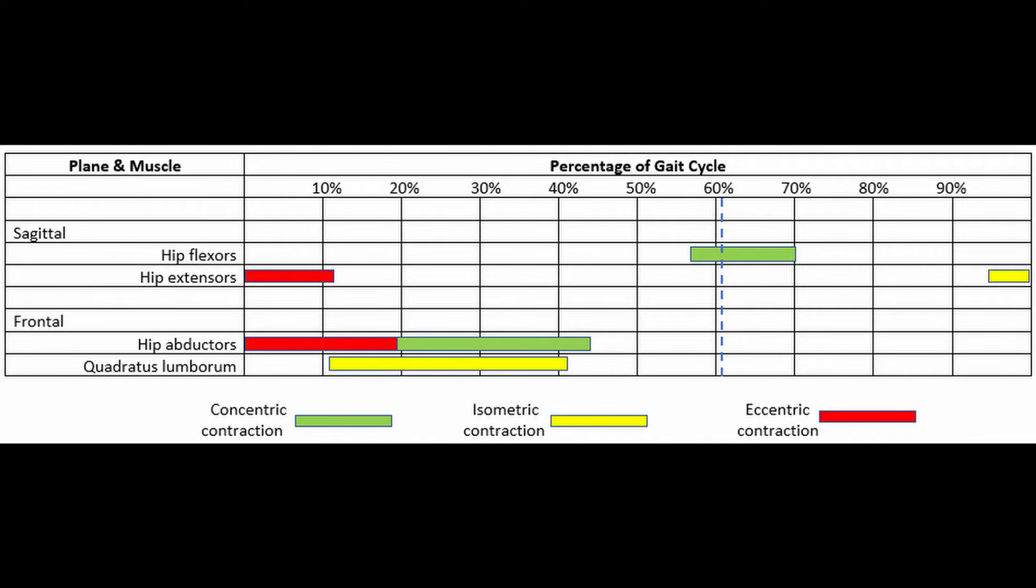As the leg hits the ground, the momentum of the trunk wants to force the hip into flexion. It's the role of the hip extensor muscles here to eccentrically contract to control the trunk on top of the leg. After that initial contraction, the hip extensors go quiet until it's time to hit the ground again.